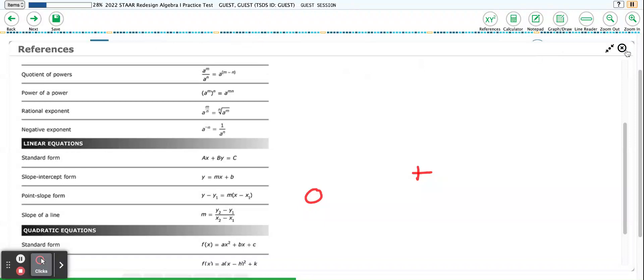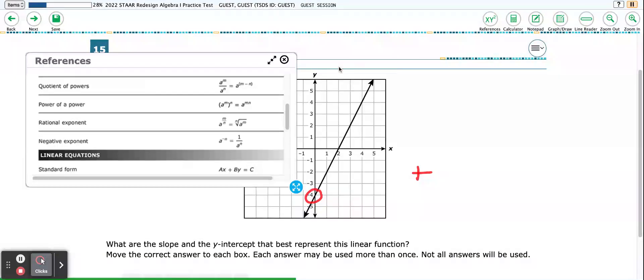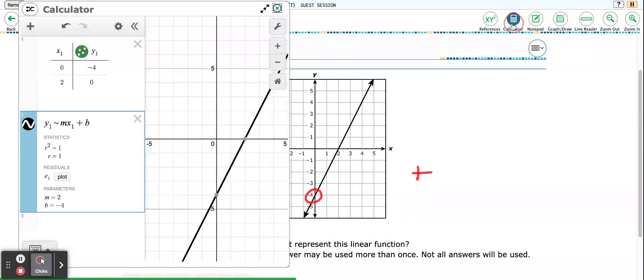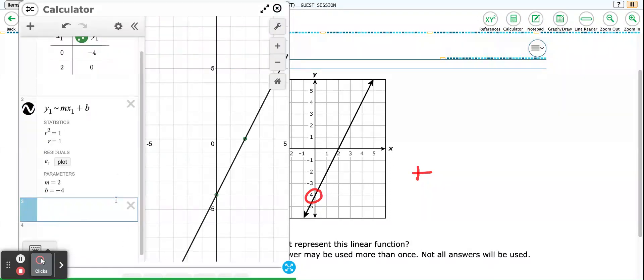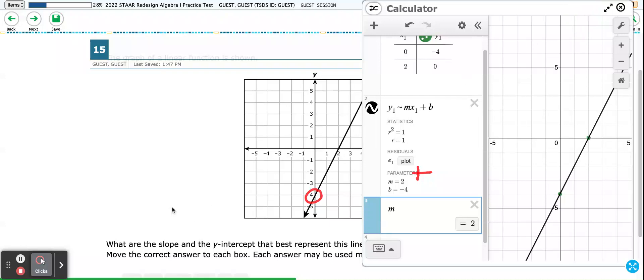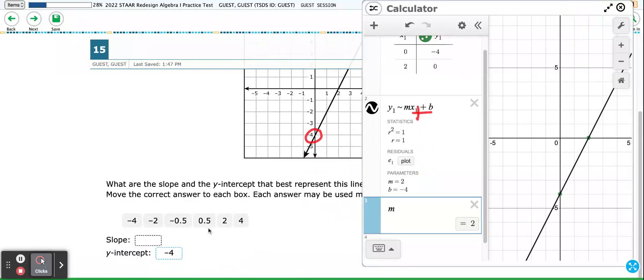So I close. So I'm going to make that small again and close my reference chart. And I'll go back to my calculator, and I'll see that my equation is still there. So m is 2. And if I need to see it bigger, I can type in m, and it'll tell me that m is 2. So I go back. Go to my question, scroll down, and I drag positive 2 to my box.